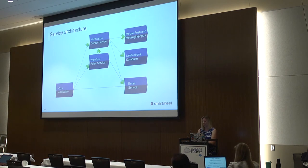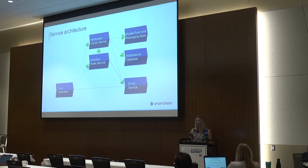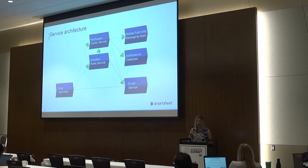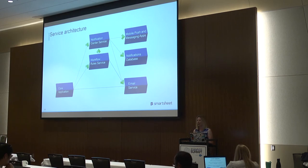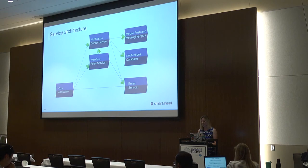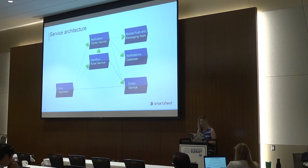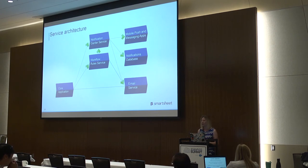Here's the service architecture that we ended up building. In the existing system, application notifications like sharing and update requests would call the email service directly. Sheet change notifications would call the workflow rule service to evaluate those changes, determine if any rules applied, and then call the email service. In the new system, we're essentially inserting the new notification service in the middle of any call that previously called the email service — storing the data in the database, sending a mobile push or message to other platforms, and calling the email service, all depending on the user's configuration settings.